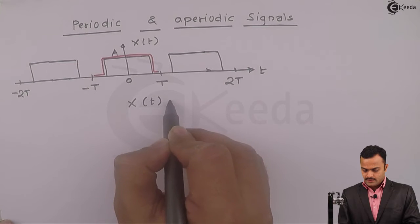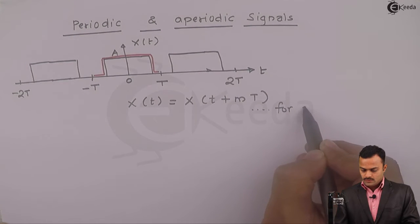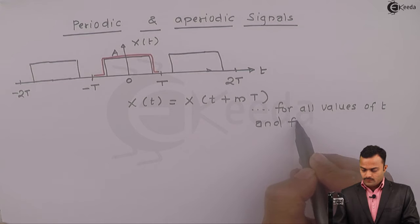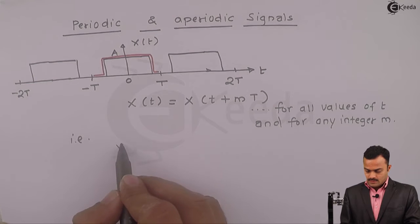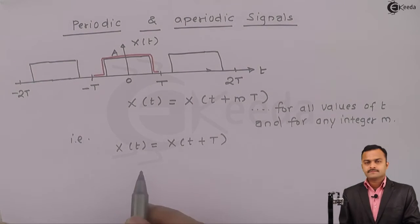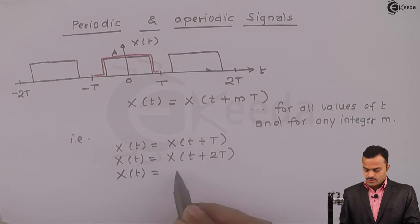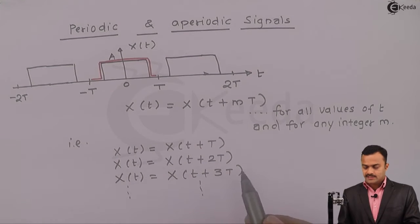We can say the equation can be written as x(t) equals x(t + mT), and this is true for all values of t. Moreover, this is true for any integer m. That is, I can say x(t) equals x(t + T), or x(t) equals x(t + 2T), x(t) equals x(t + 3T), and so on. Meaning I can have an integer m, integer varies from 1 to infinity, still the signal repeats itself. This is called a periodic continuous time signal.